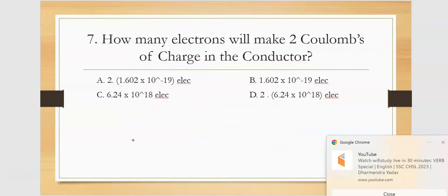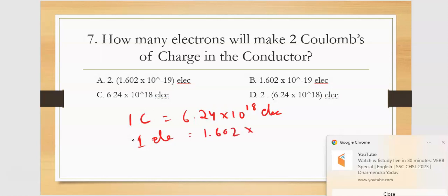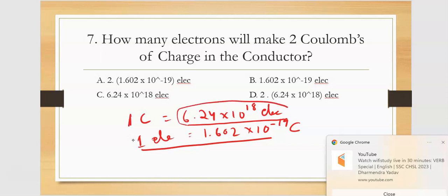How many electrons will make two coulombs of charge in the conductor? One coulomb equals 6.24 into 10 to the power 18 electrons. One electron charge is 1.602 into 10 to the power minus 19 coulombs. So for two coulombs, calculate accordingly — two into 6.24 into 10 to the power 18.